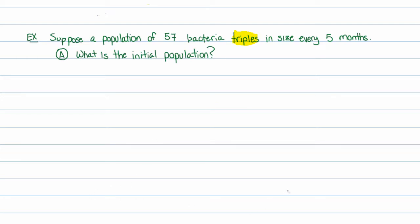Our formula for an exponential function is p of t equals p-naught times b to the t, where p-naught is our initial value, our initial population. The initial population for this problem is 57, so p-naught equals 57.